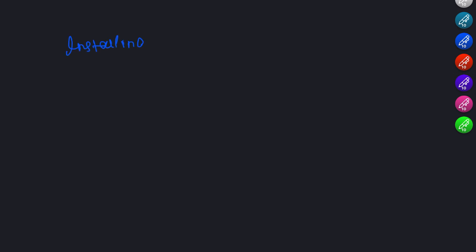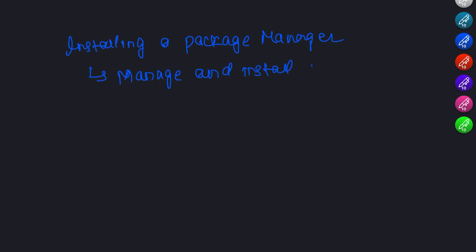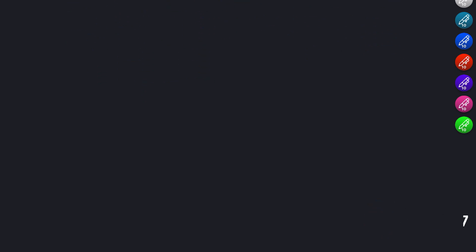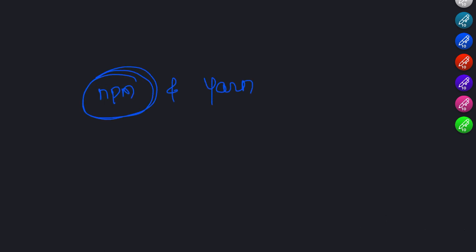The third step in setting up your development environment is installing a package manager. A package manager is a tool that helps you manage and install third-party libraries and frameworks for your JavaScript projects. There are several package managers available, but in this tutorial we will be using npm, which is included with Node.js.